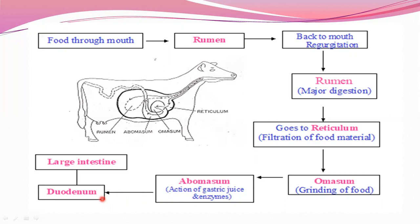After the abomasum, food travels to the duodenum, part of the small intestine, and then to the large intestine. The function of the small intestine and large intestine is absorption of nutrients and water. Any material not digested by this stage will be excreted from the body. This is how the digestion process takes place in ruminants.